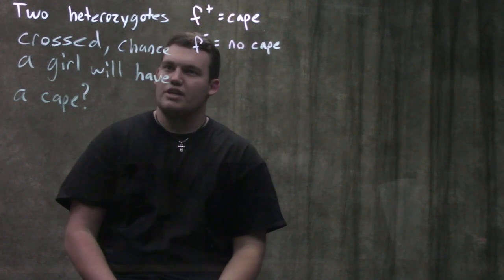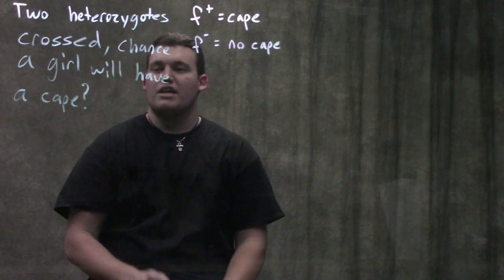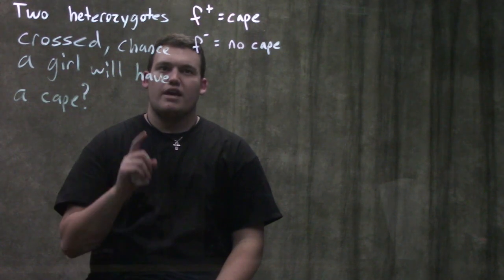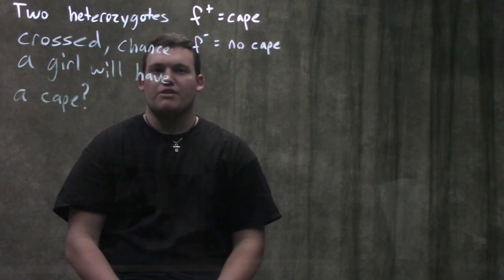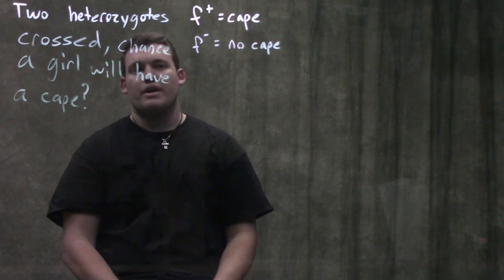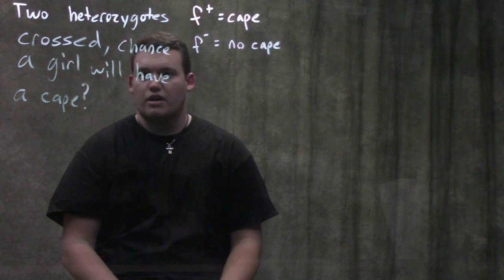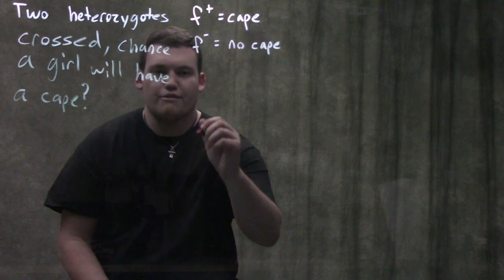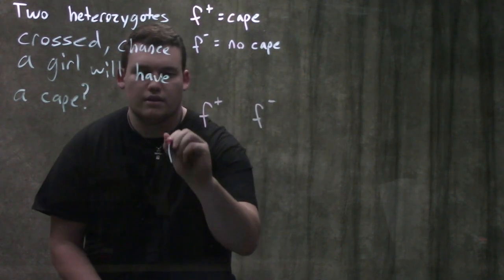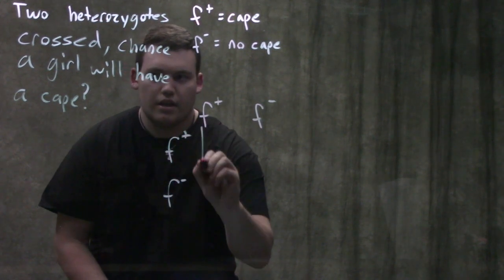Our problem is asking us to cross two heterozygotes and find the chance that a girl will have a cape, assuming this is a sex-influenced trait where capes are dominant in males and recessive in females. I'm going to start by drawing a Punnett square, so we've got two heterozygotes: f-plus f-minus crossed with f-plus f-minus.